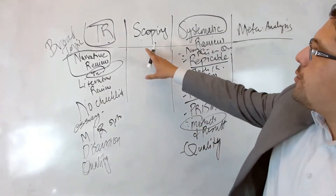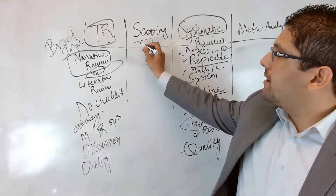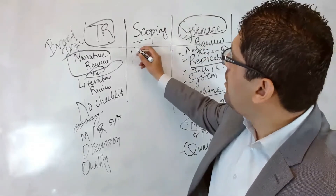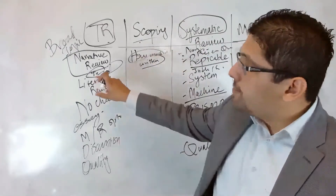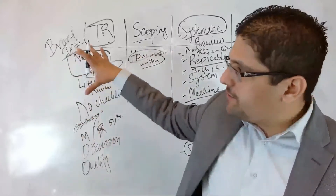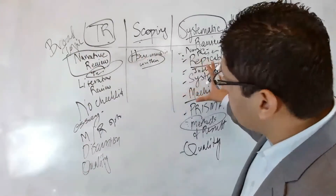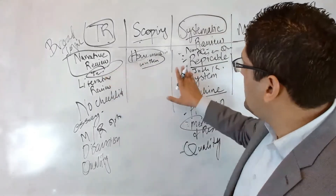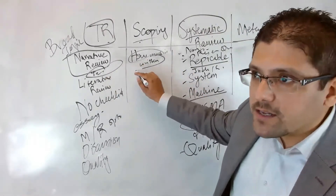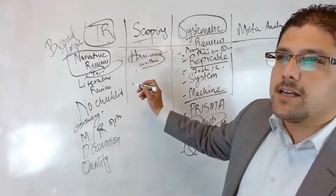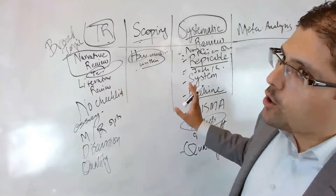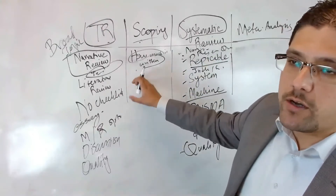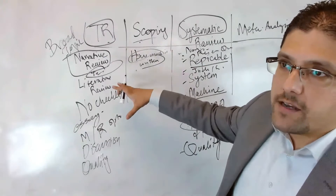A scoping review — as the name suggests — means you are checking the scope of a topic: how much has been written about it. In a narrative review you don't care how much is written; in a systematic review you have a narrow topic and a research question. A scoping review sits somewhere in between: you explore how much literature is available, and you include all possible studies published, for example, in the last five years.